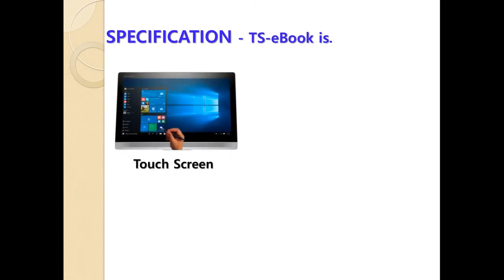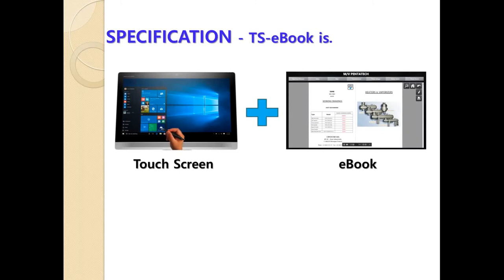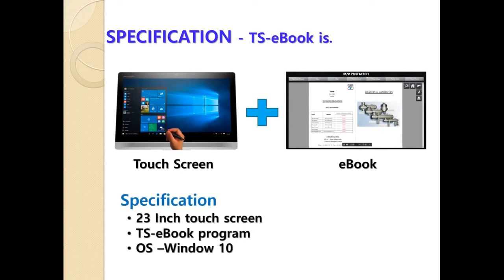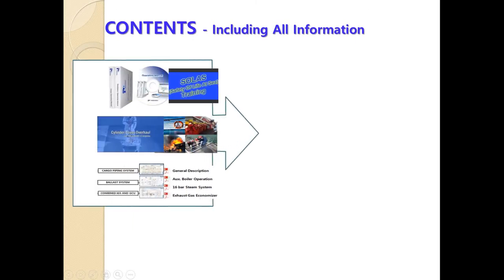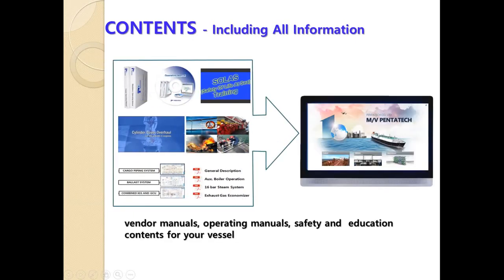TSEbook consists of a touch screen and program containing various contents. The specification includes a 23-inch touch screen, the TSEbook program, and OS Windows. TSEbook can easily provide various contents, and you can get all information easily and simply by using TSEbook.